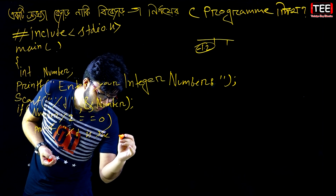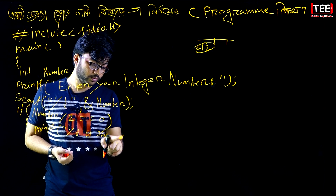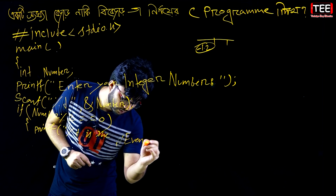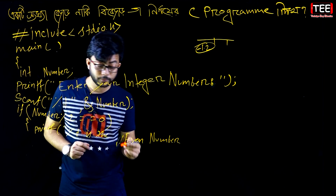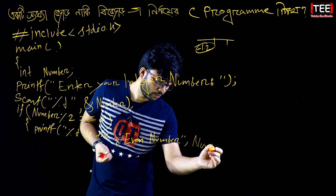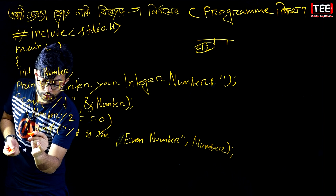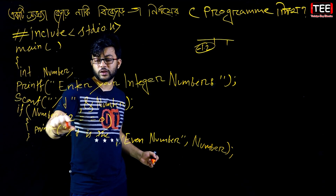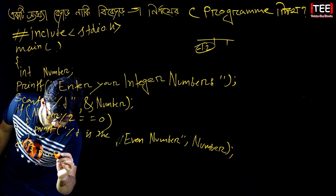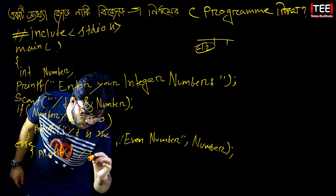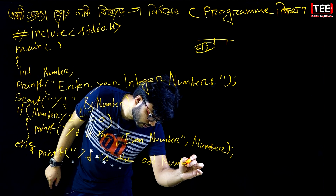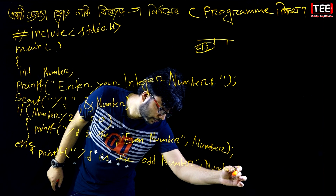This is the even number. In the program, if the number is even, it will show even number. If the condition is false — we get a false — then the answer is printf: the person's number is the odd number. If the condition evaluates false, we get the odd number output.